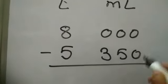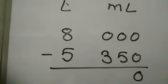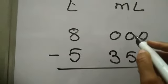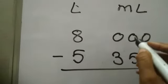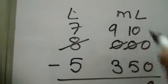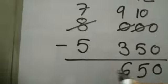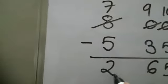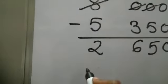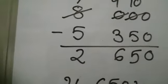Let us subtract now. 0 minus 0 is 0. Now 0 minus 5 is not possible, so we take borrow. But the previous digit of this 0 is again 0, so we need to take borrow from 8. So this will be 7, this will be 9, and this will be 10. Now 10 minus 5 is 5, 9 minus 3 is 6, and 7 minus 5 is 2. Hence the answer is 2 liter 650 milliliter.